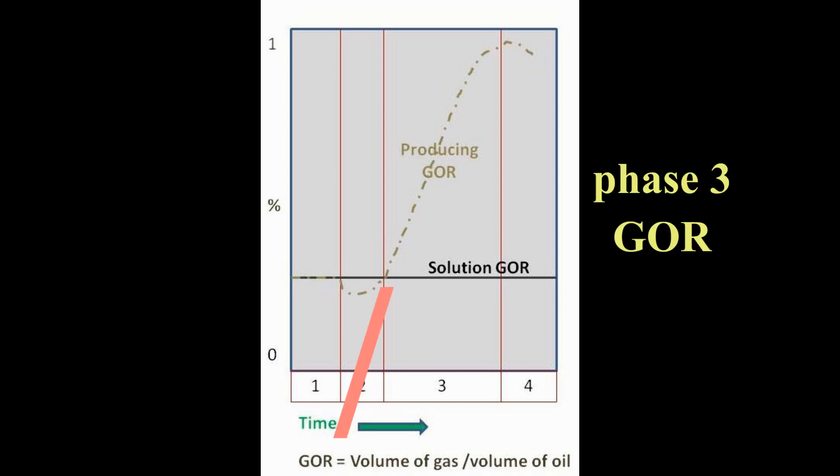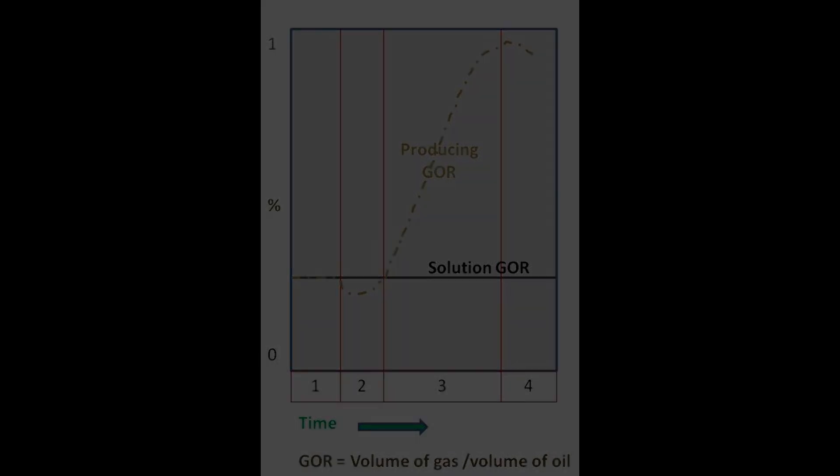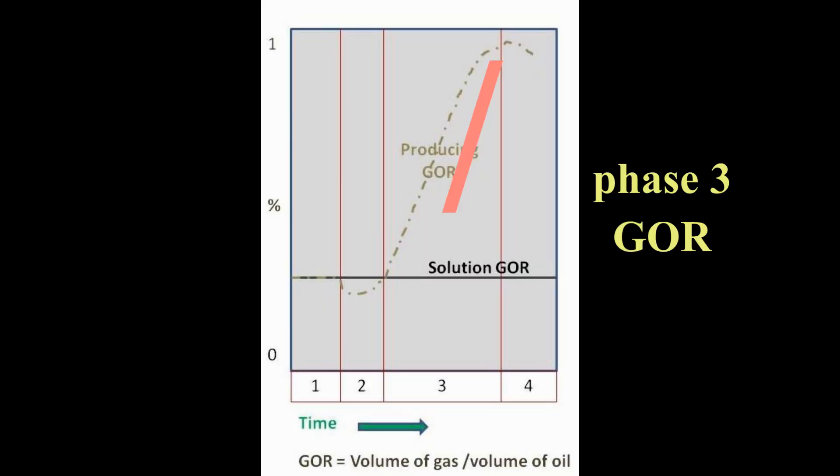In phase three, critical gas saturation is reached and free gas is produced along with the oil and its remaining solution gas. Gas expansion from the continuing pressure drop is the main drive mechanism and it pushes out the oil. In the later stage of phase three, the pressure drops rapidly because of the high gas production rate. This means that the reservoir is producing less oil. When the GOR reaches a maximum value, we state that phase three has ended.